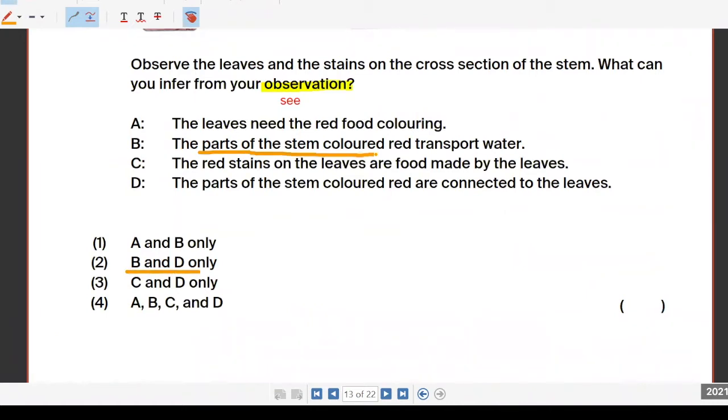B and D means parts of the stem colored red transport water, and parts of the stem colored red is connected to the leaves. Of course A is out because the leaves do not need red food coloring. The leaves only need water. And C is out because the red stains are not because of the food made by the leaves. So the right answer is two.